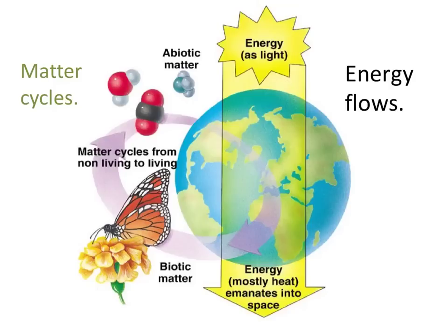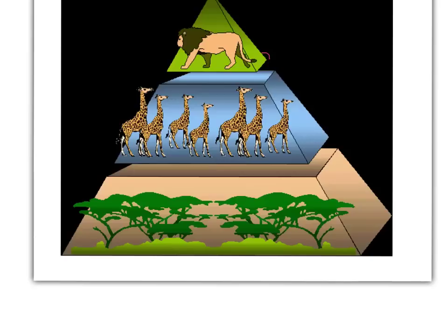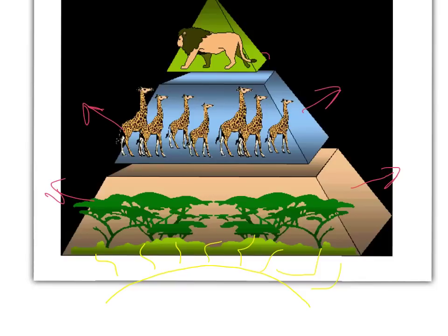In all ecosystems, and indeed in the biosphere at large, while matter is recycled from one form to another, energy flows linearly, starting for the most part from the sun and eventually emanating into space in the form of heat. Because the amount of sunlight that's actually making it to the Earth is fixed — it never really increases or decreases — and because energy is being lost at each trophic level in the form of heat, as you move from trophic level to trophic level, less and less organisms can be supported.